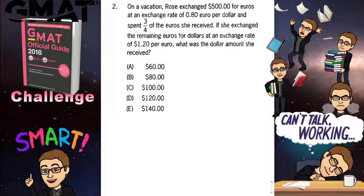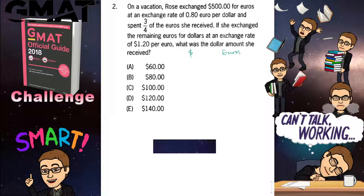So Rose exchanged $500 for euros at an exchange rate of 0.8 euro per dollar. I'm going to find out the amount of euros that Rose will get for $500. To do this, the best way is to set up a proportion. I will put dollars on the left-hand side and euros on the right-hand side. Let me write $500.